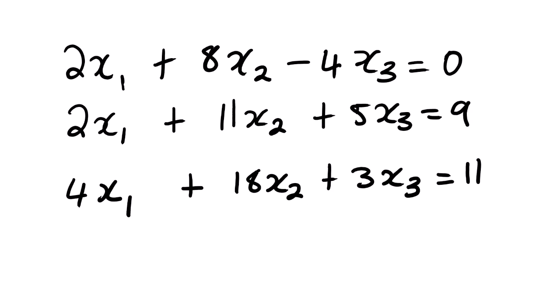In this case we have three equations with three variables. Don't be confused — sometimes you might see X, Y, and Z, and sometimes you will see something like X1, X2, and X3. These are different variables.